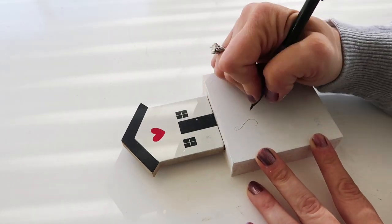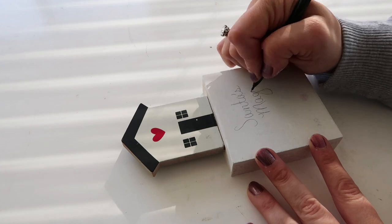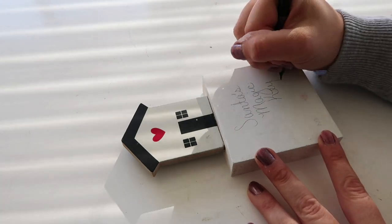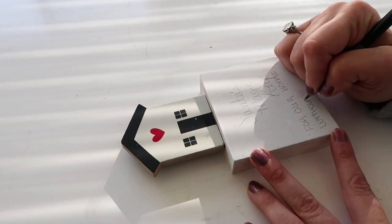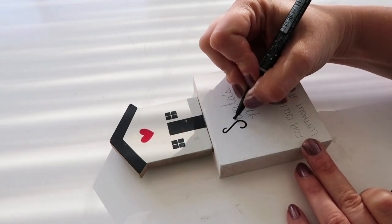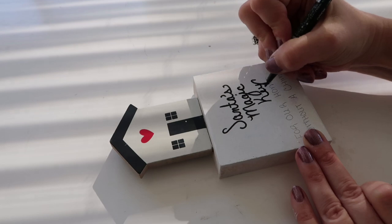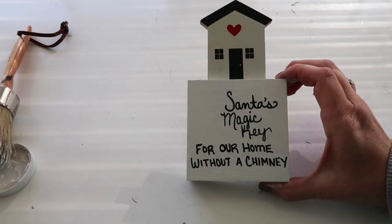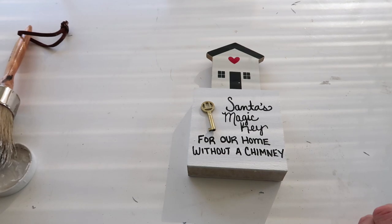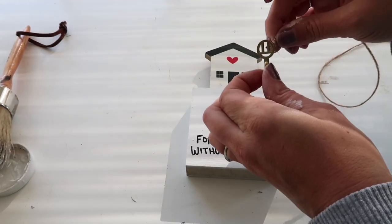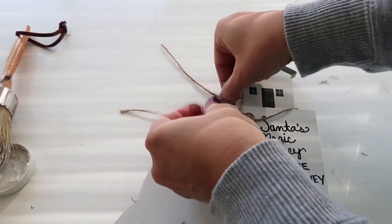And then here, if you have a Cricut, then you can go ahead and use that. But I don't use one. So I just did it freehand and wrote out Santa's magic key for our home without a chimney. And I just think that is so cute because there's so many homes and apartments and stuff that don't have chimneys. And I think this is just a really cute gift idea for kids. And then you just attach your key. And I didn't have, I know I have Christmas ribbon, but I couldn't find any. So I just used some twine, but I think some really bright Christmas ribbon would be super sweet for this.